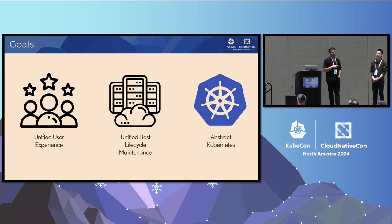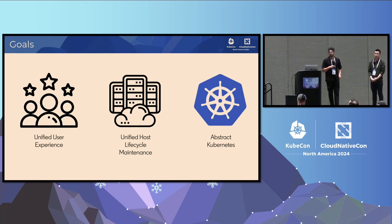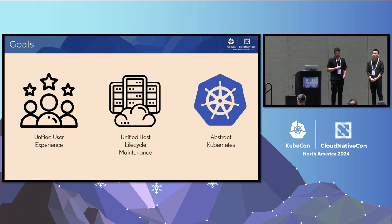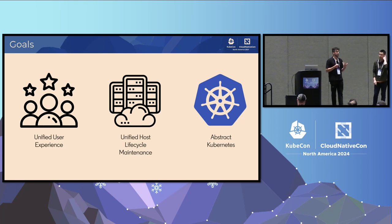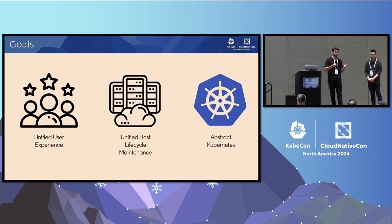We also wanted to make it very easy to do host lifecycle maintenance — we have a lot of nodes and a lot of things go wrong in the data center, so we wanted seamless integration with our host lifecycle maintenance stack. The last thing is we really wanted to abstract Kubernetes away from our workloads. Kubernetes is pretty hard. Operators are pretty hard. Every time someone writes an operator and adds a webhook, one of my hairs goes white. We wanted to give people more abstract building blocks so they could focus on building application logic, not deploying on Kubernetes.